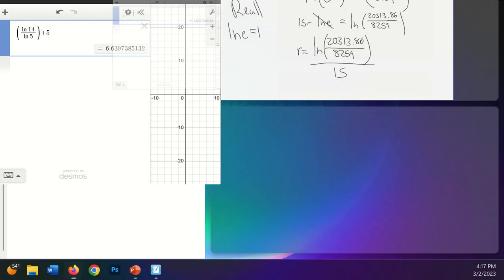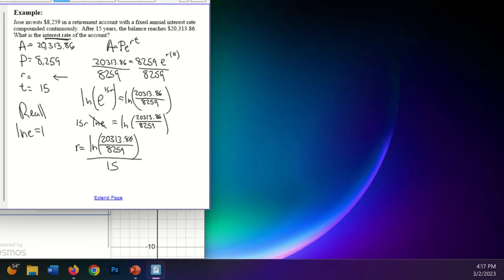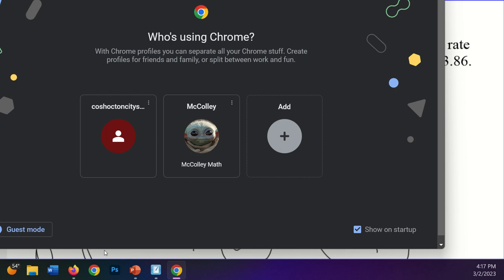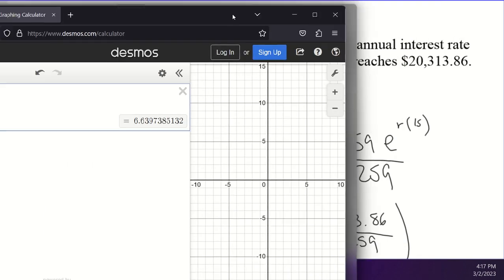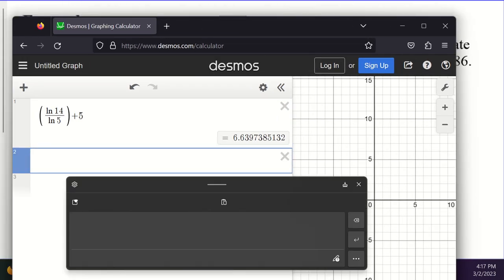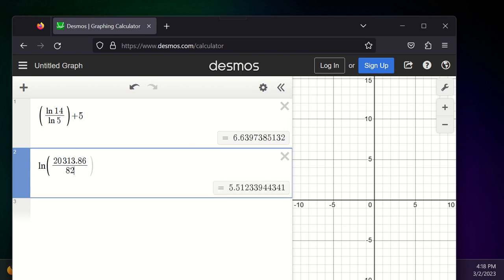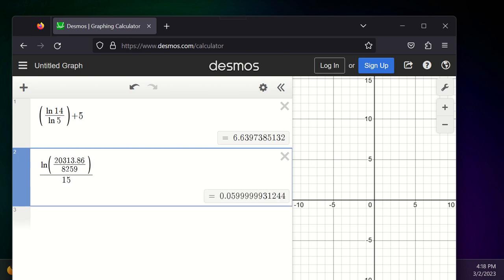And so I'll come up here. Let's bring this back down here. Let's get that Desmos. There we go. Okay, let's see if I can do this. Actually I'm going to move this other screen up so I can see it. And then I'll type it in. All right, let's see here. I have to do the LN of parentheses 20,313.86, and then divide that by 8,259. We'll close that parentheses. And then we'll divide that by 15.